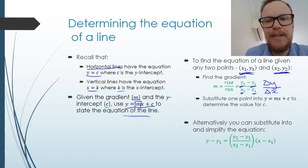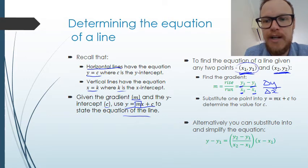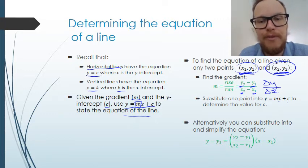Once we've found the gradient, we can then substitute one point, so either point 1 or point 2, into y equals mx plus c, because then we know the gradient, we know the y, we know the x, and solve for c to determine the value of c.